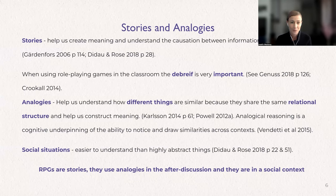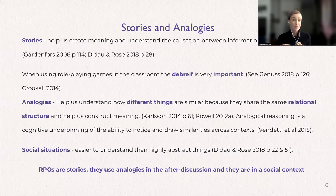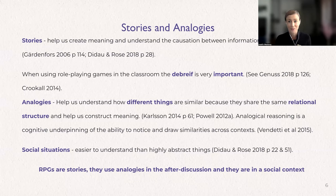Evolutionary psychologists suggest that we humans seem to be better at learning knowledge and skills that have been important for our survival as a species. This could explain why we have an easier time understanding things that are social over things that are highly abstract. We are better at solving the same math problem when it's presented and phrased as a social situation than when it's purely abstract. And role-playing games are social, even in their most basic form.